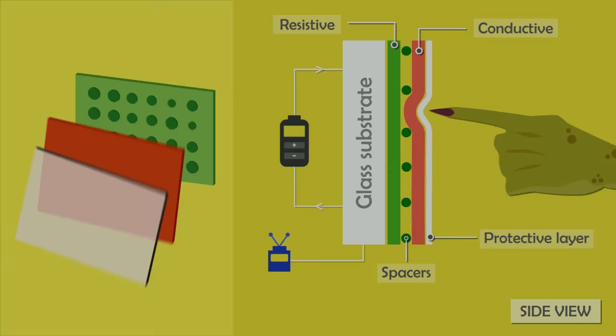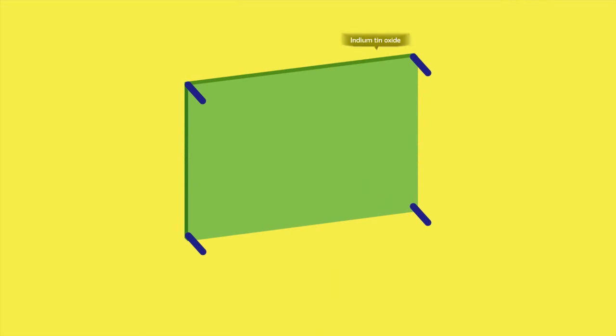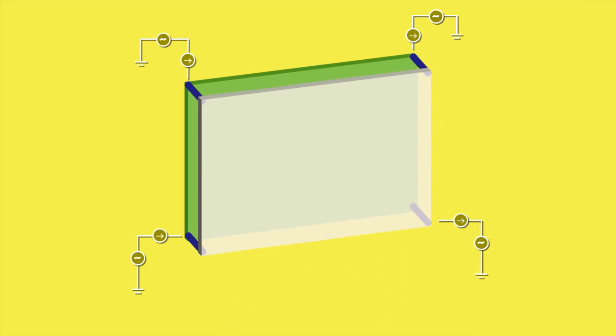How does a capacitive touchscreen system work? In the capacitive system, a layer that stores electrical charge — constructed from materials like copper or indium-tin oxide — is used. Sensors at the corners and a protective casing complete the whole setup. A minute amount of voltage is applied at all corners of the touchscreen.